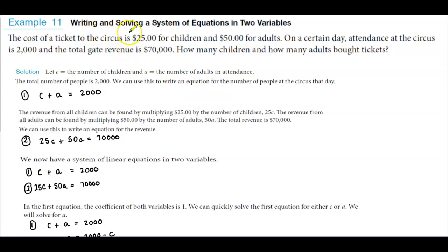In example number 11, we're going to be writing and solving a system of equations in two variables. The cost of a ticket to the circus is $25 for children and $50 for adults.